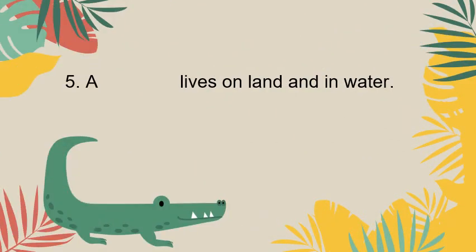Number five: A dash lives on land and in water. Yes — a crocodile lives on land and in water.